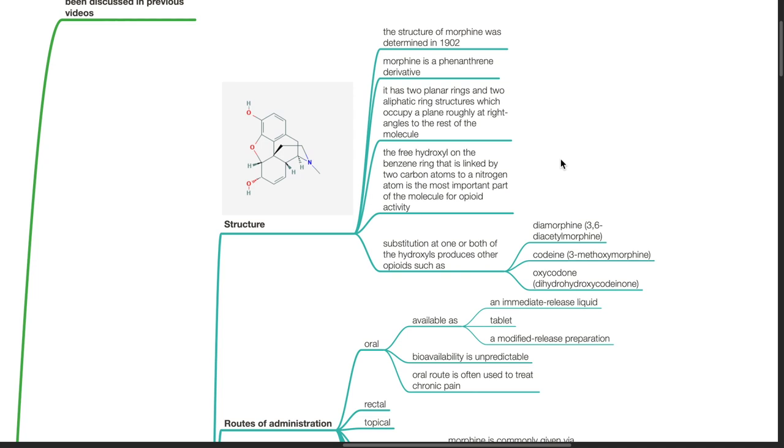Substitution at one or both of the hydroxyls produces other opioids such as diamorphine, 3,6-diacetylmorphine, codeine, 3-methoxymorphine or oxycodone, dihydrohydroxycodeinone.